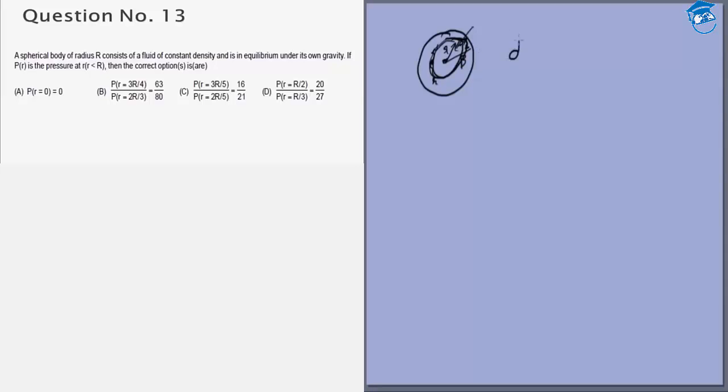So in that case dp, the small change in pressure, would be minus rho g dr. Rho g h basically, with h is this thickness, because as we go outside the pressure decreases. At the surface the pressure would be zero because there is nothing to exert a pressure on it.